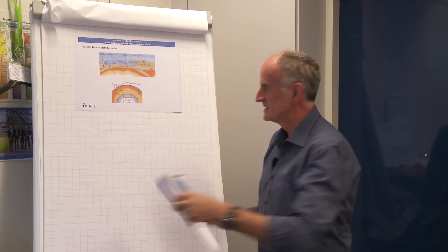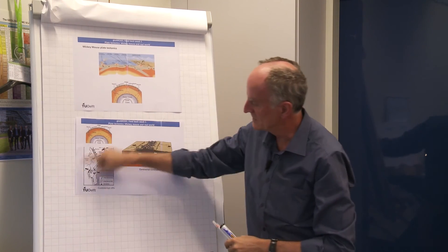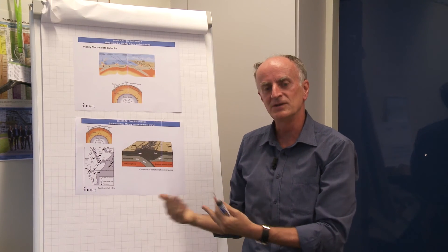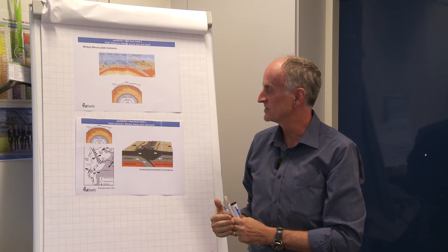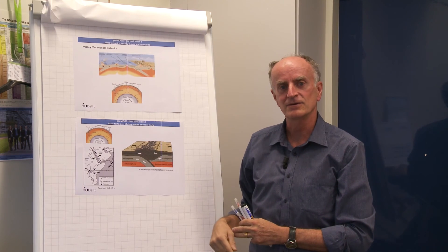I want to show you two of these things. The first one is what you see in this picture, which is the East African rift. This is the beginning of a new rift which will possibly lead to a passive continental margin. This scheme is not present in my Mickey Mouse plate tectonics.